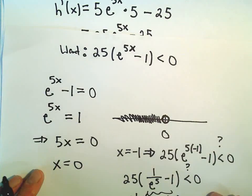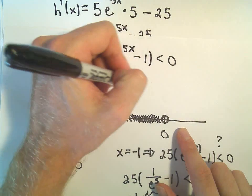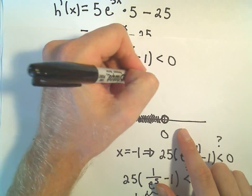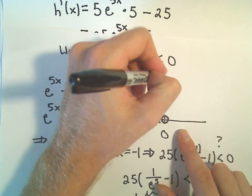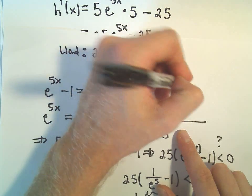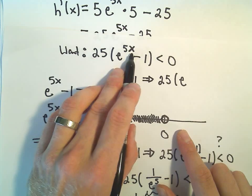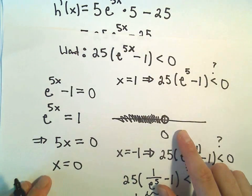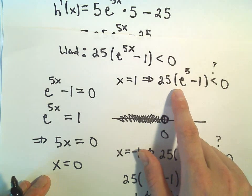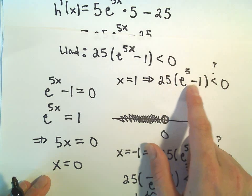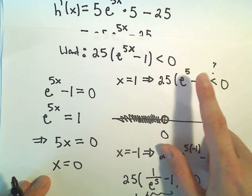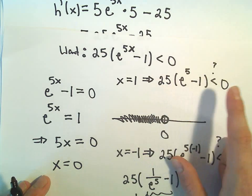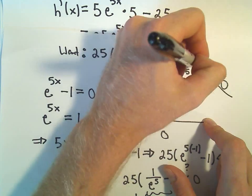And now we could do the same thing. We could test something bigger, maybe positive 1. So if we test positive 1, now I'm asking myself, is 25 times e to the, if we plug in x equals 1, we'll just get 5. Is that less than 0? Well, e to the 5th is a pretty big number. When we subtract 1, this is still positive. We have a positive times a positive, and that's not going to be less than 0 at all.